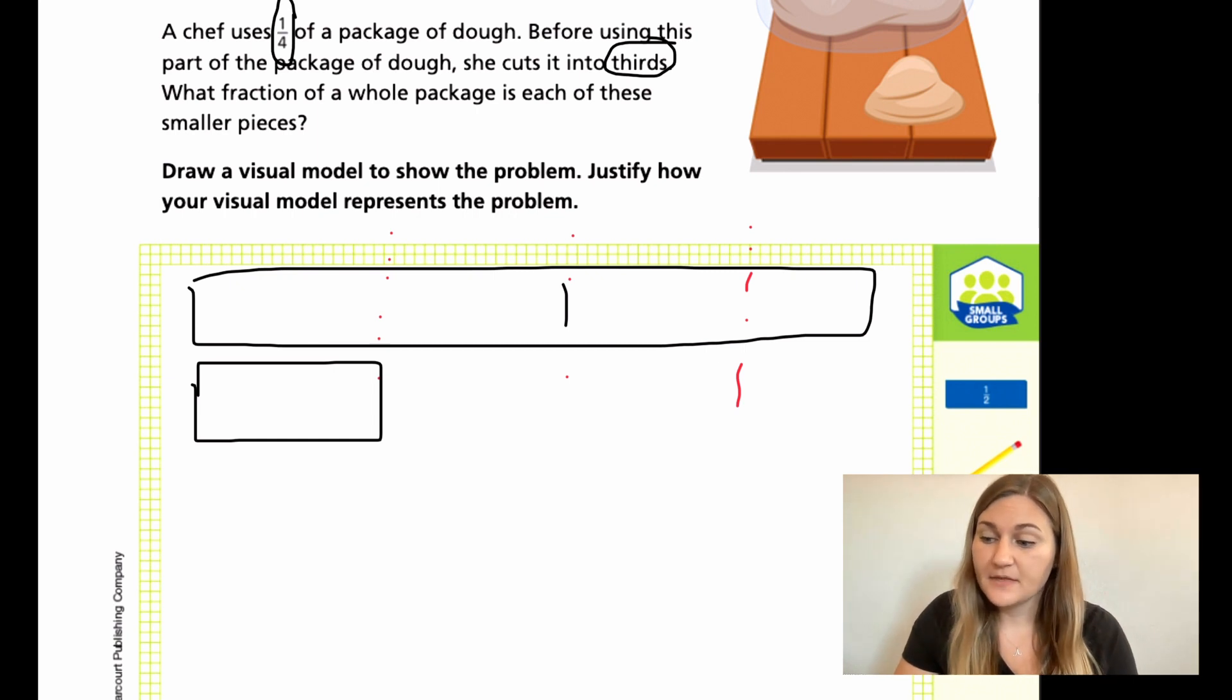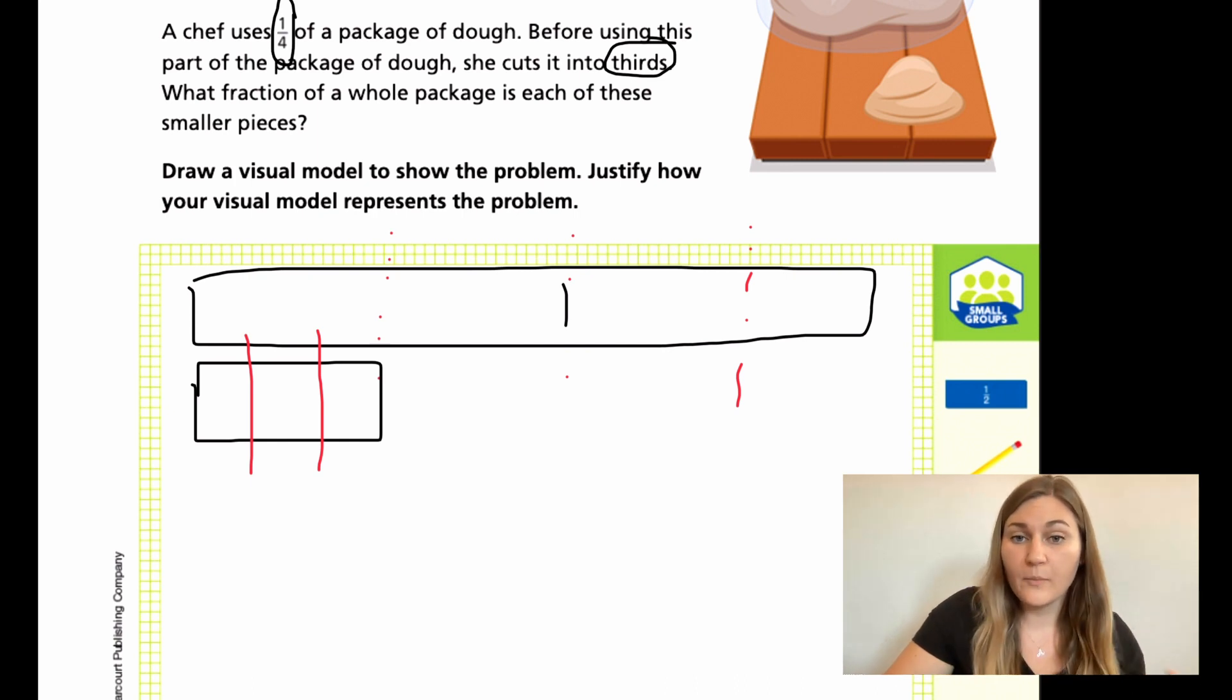But then it says, before using this part of the package of dough, she cuts it into thirds. So now just this one fourth needs to be cut into thirds. Now there's three pieces. So the question is, what fraction of the whole package is each of these smaller pieces? So we need to figure out what one piece of this one third is compared to the whole package.